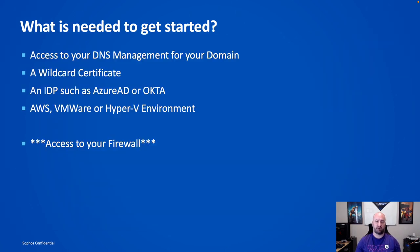So what is needed to get started? First, you're going to need access to your DNS management tools for your domain. You will need a wildcard certificate — whether that's a purchased wildcard or Let's Encrypt — but you will need a valid wildcard certificate. You will need an IDP; we support today both Azure and Okta with more to follow. You will also need a virtual or cloud environment; today we support AWS, VMware, and Hyper-V. If deploying without ZTNA as a service and going direct to the gateway, you would also need access to your firewall to set up those firewall rules.